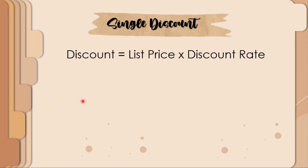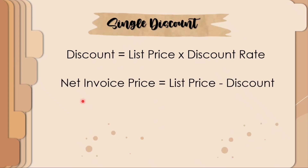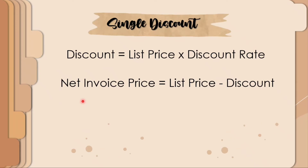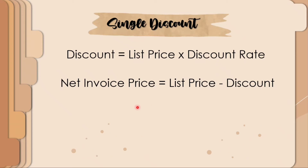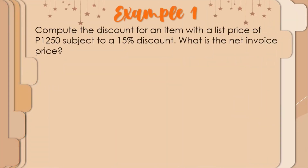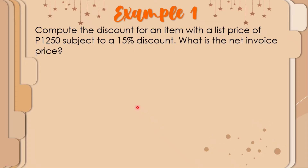For a single discount, the formula for the discount amount is: list price times the discount rate. The net invoice price is the new amount of the item after deducting the discount from the list price or selling price. To compute it: list price minus the discount amount.